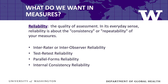Internal consistency is the most commonly assessed form of reliability, often through the computation of Cronbach's alpha, but other forms of reliability are also important in implementation science. For example, if we are using an observational tool to assess fidelity of intervention delivery or even fidelity of implementation strategy enactment, then inter-rater or inter-observer reliability becomes very important.